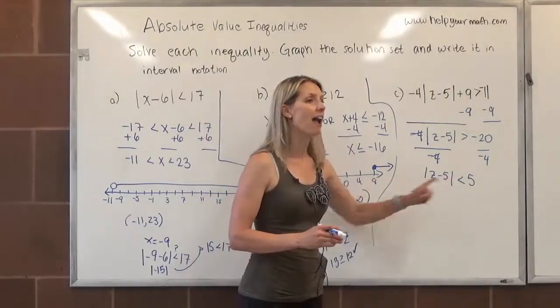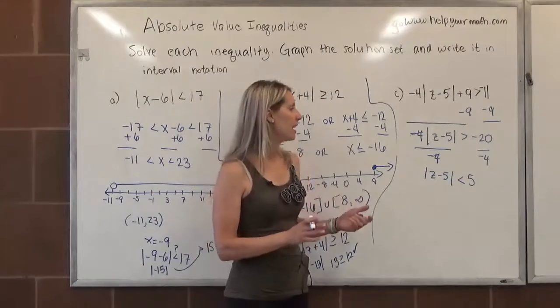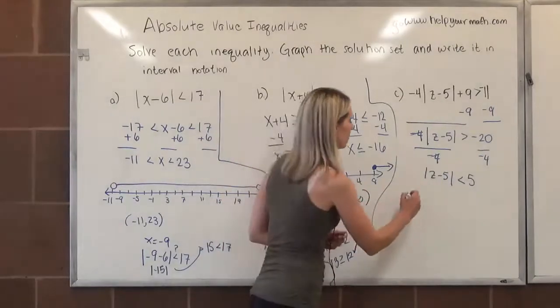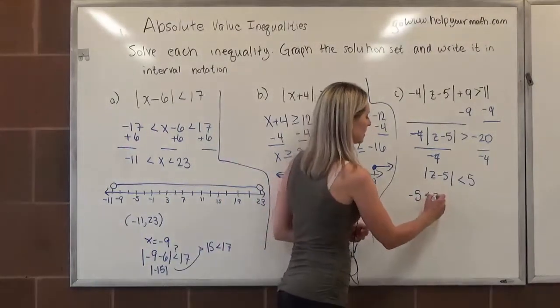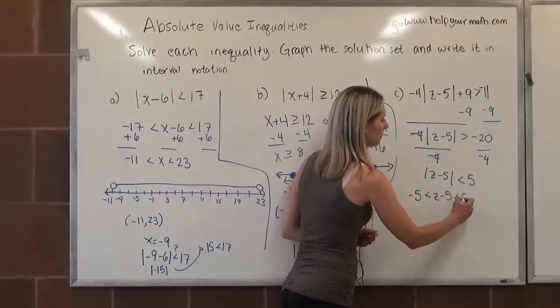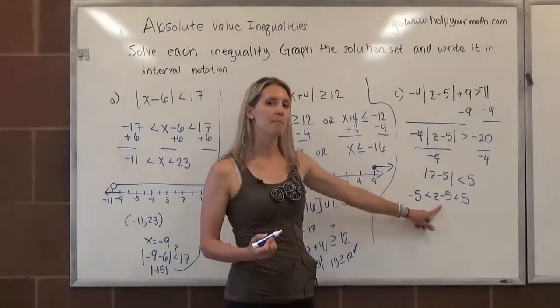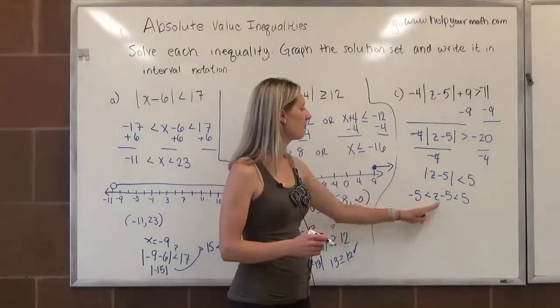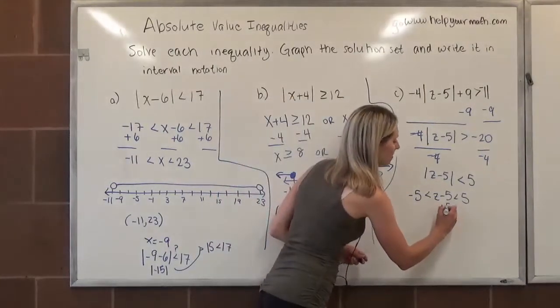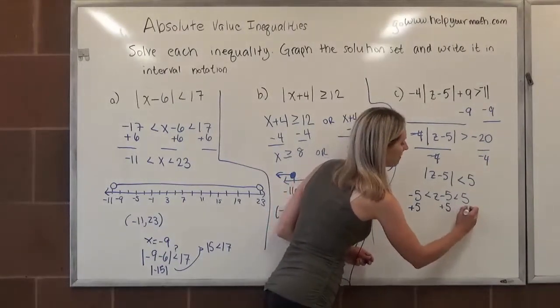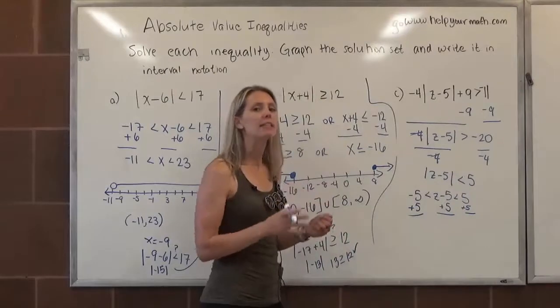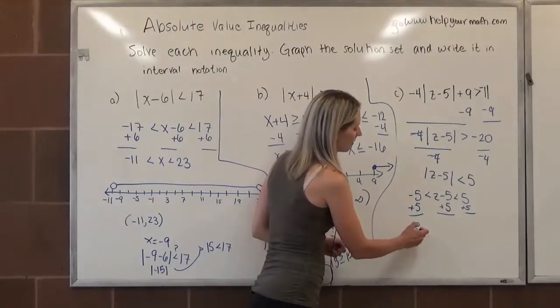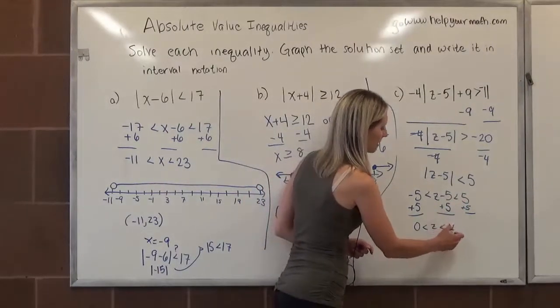Now we have the absolute value by itself. The absolute value is less than 5 units from 0 on a number line—less than is an and situation. So we're talking about numbers that are in between negative 5 and positive 5. So we can set up a compound inequality. Negative 5 is less than z minus 5, which is less than 5. We want to isolate z in the middle. Since it's being subtracted by 5, we will add 5 to the three different sides. So I add 5 in the middle, I add 5 to the left, I add 5 to the right, maintaining the inequality. Negative 5 plus 5 is 0, is less than z, is less than 5 plus 5 is 10.